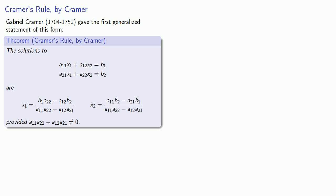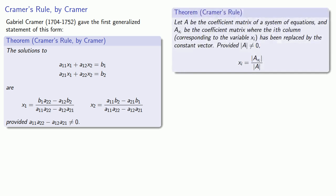We can generalize this result for any system of equations. So let A be the coefficient matrix of a system of equations, and Axi be the coefficient matrix where the ith column, corresponding to the coefficients of the variable xi, has been replaced by the constant vector. Provided our determinant is not equal to 0, then xi is going to be the quotient of the determinant of this Axi matrix divided by the determinant of A.